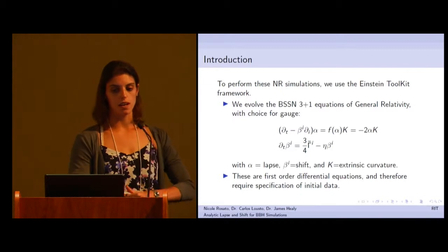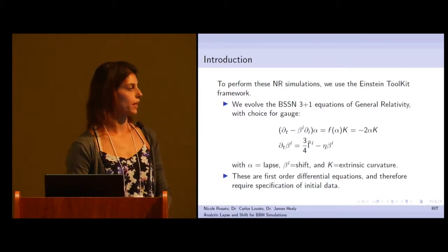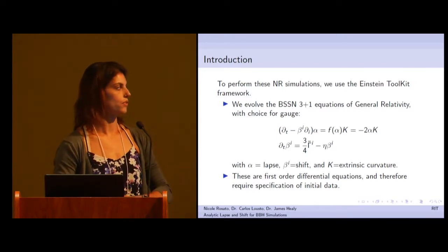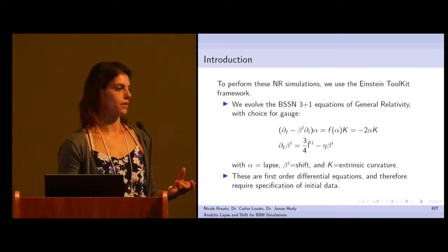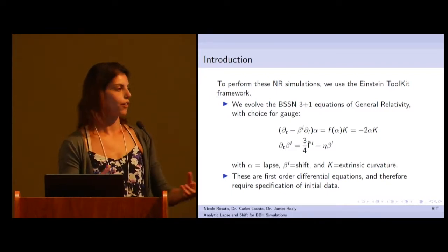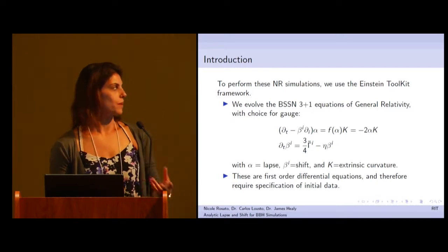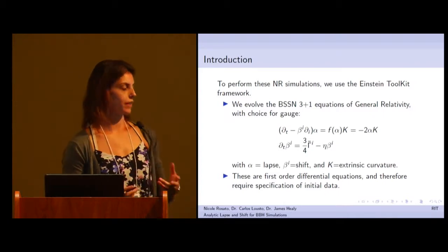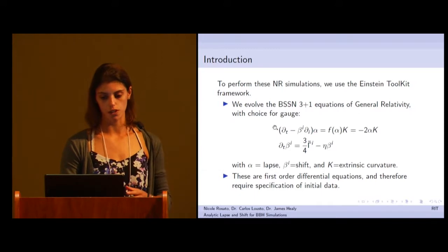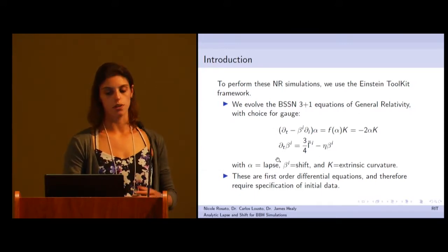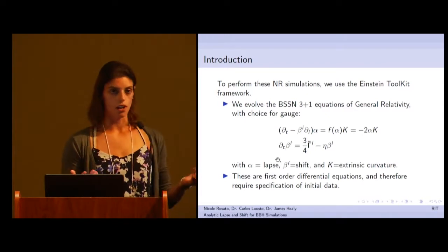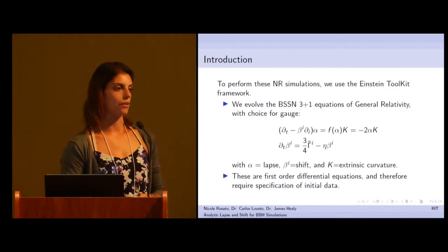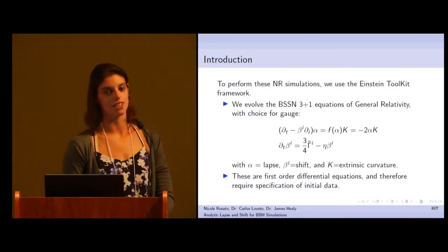To perform these NR simulations, as I mentioned, we use the Einstein Toolkit, which is a fully open source code used by numerical relativists to study black holes and other heavy sources evolving in time. We evolve the BSSN 3+1 equations of GR, and they require a specific choice for something called the gauge. The gauge is made up of an equation that governs the lapse and also the shift. The lapse is a scalar function and the shift is a 3-vector. These are first order differential equations and therefore require the specification of initial data.